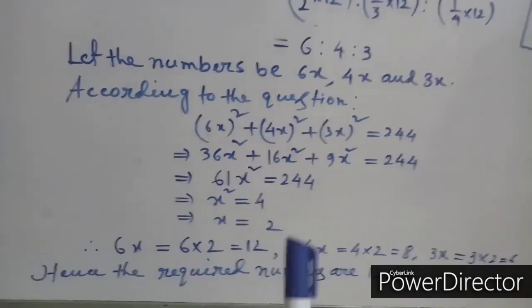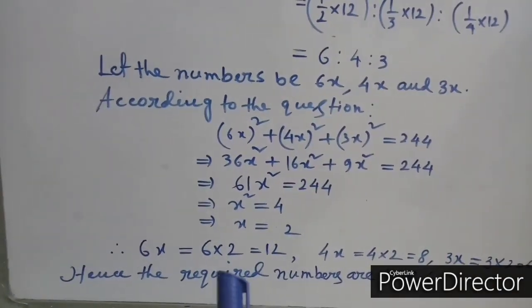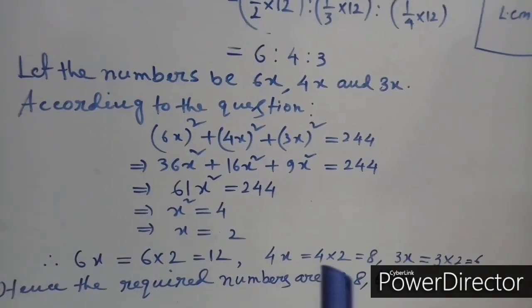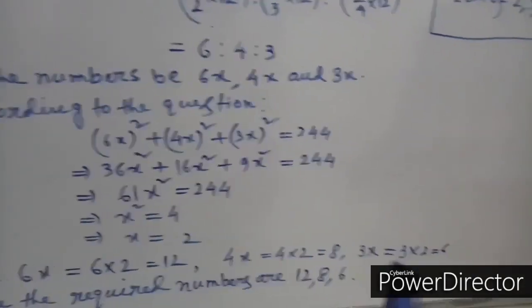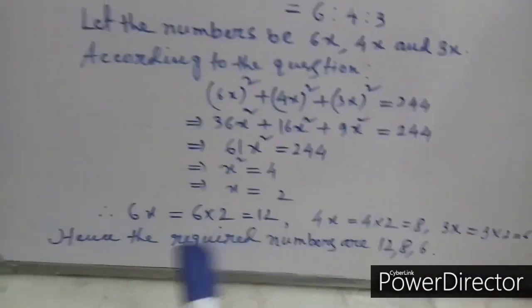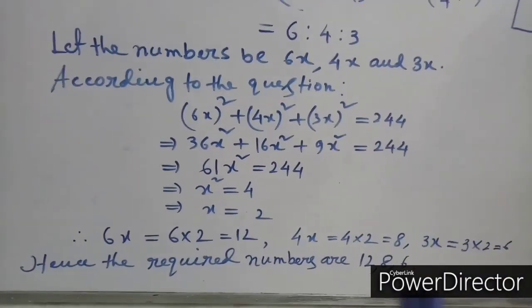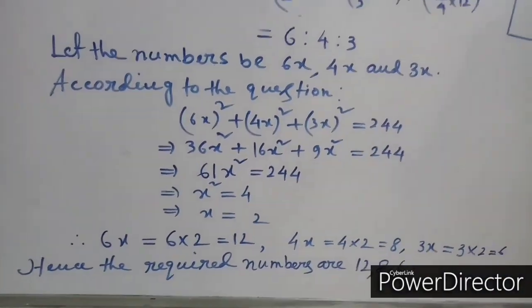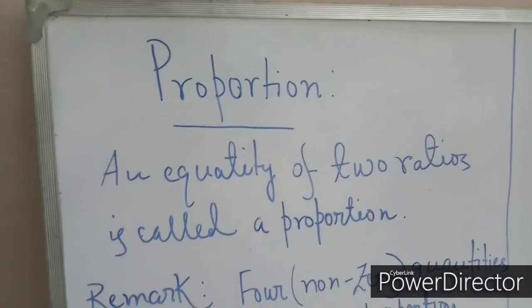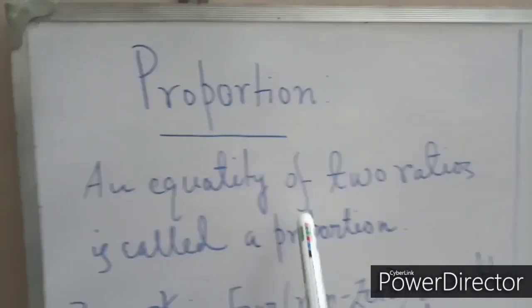With x = 2: 6x = 12, 4x = 8, and 3x = 6. Hence the required numbers are 12, 8, and 6.